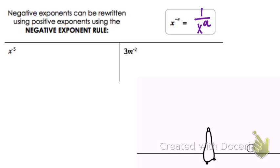So in this case, it's x to the negative 5, so I'm going to take that, it's not going to be negative 5 anymore, it's just going to be 5, and I'm going to put it down below in the denominator.